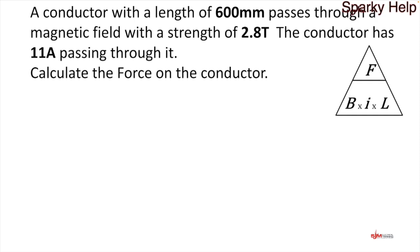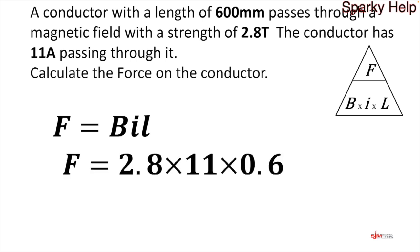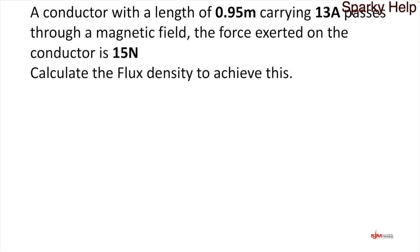Let's look at another. We've got our triangle F over B I L. We don't have to do much transposition for this one because it's straightforward. However, the point to note on this one is that the length of the conductor is in millimeters and it needs to be in meters. Everything else can stay the same. 2.8 times 11 times 0.6, and that gives us 31.4 newtons of force. Hopefully that's relatively straightforward.